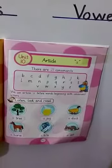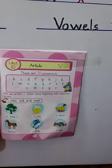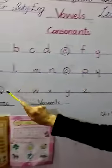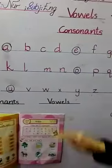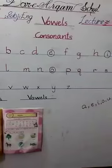Let me tell you about the consonant letters. The letters except A, E, I, O, and U are the consonant letters.